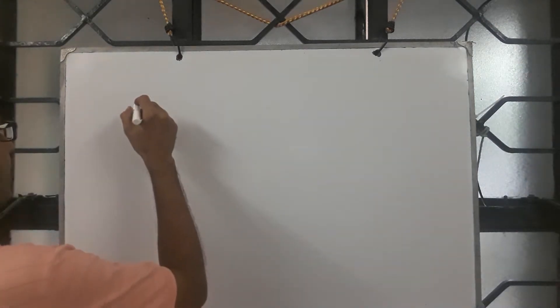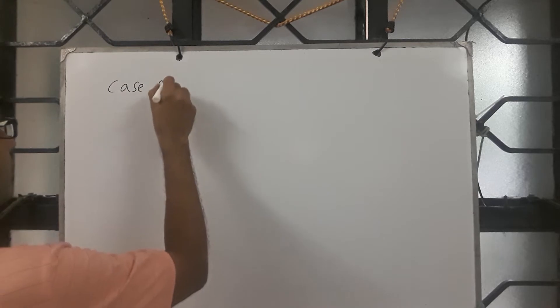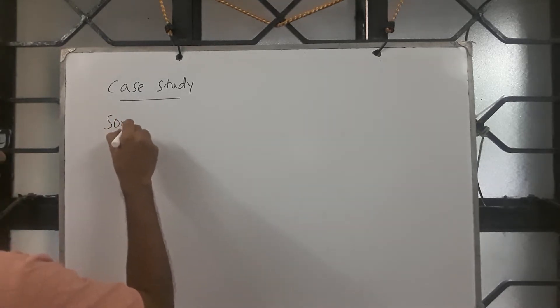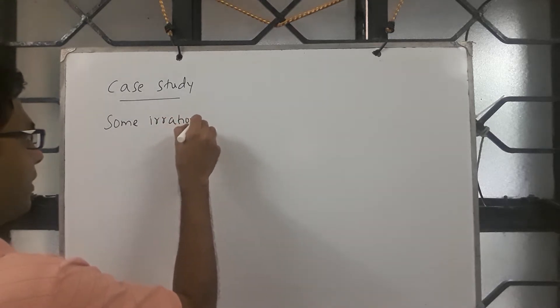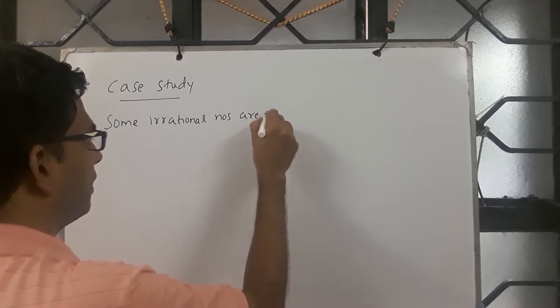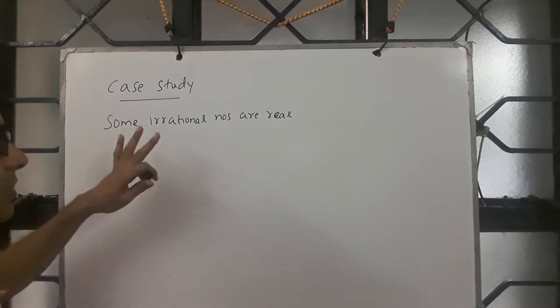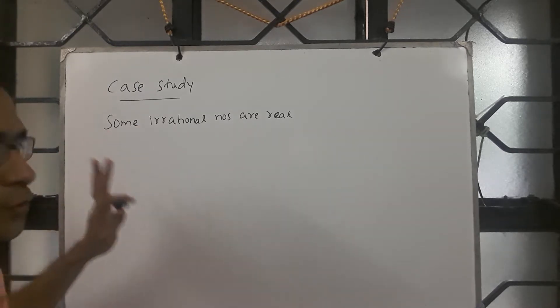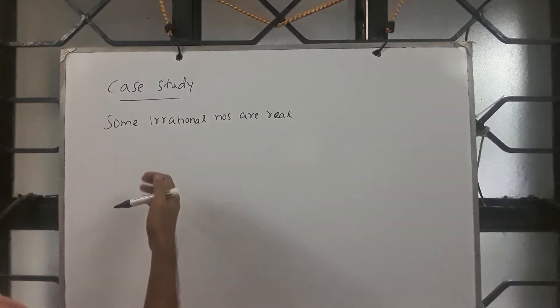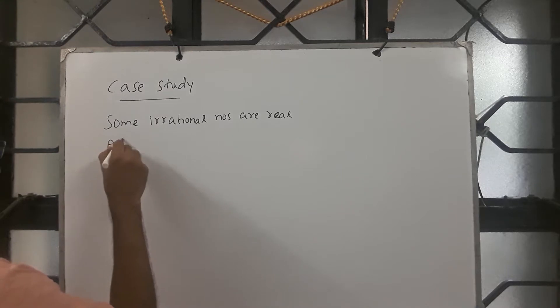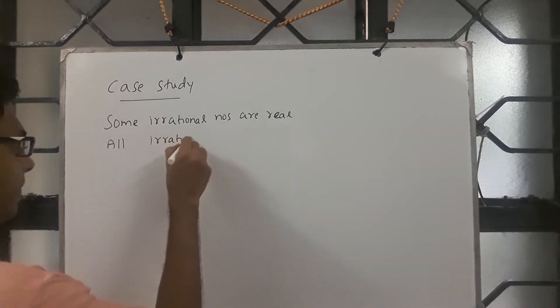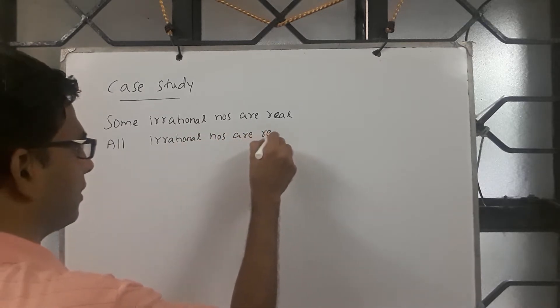Let us look at this example and see how to express statements using first-order logic. The first statement is: some irrational numbers are real. In fact, every irrational number is a real number, but for this discussion I am considering this statement which is true. One can also make a stronger statement: all irrational numbers are real.